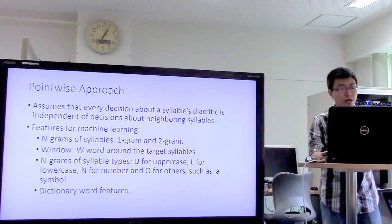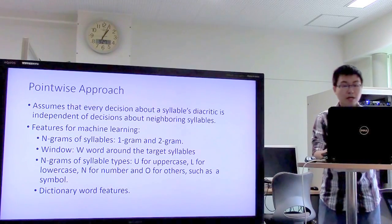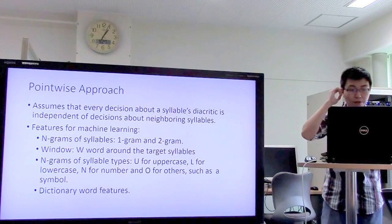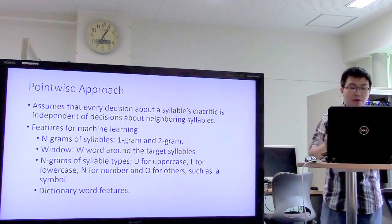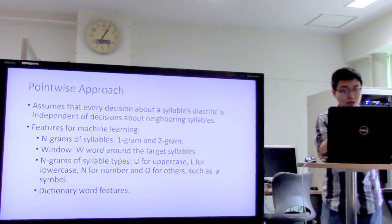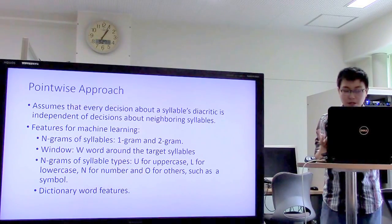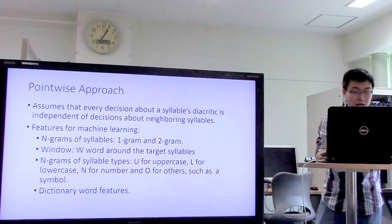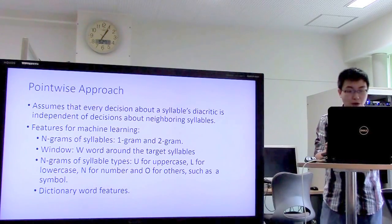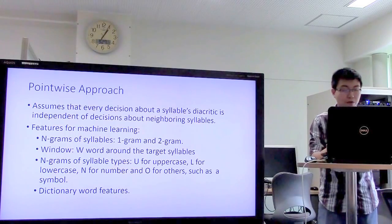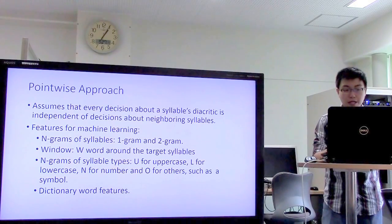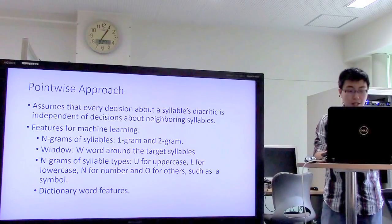A word-wise approach assumes that decisions about a syllable's diacritic are independent of decisions about neighboring syllables, which is suitable for machine learning. The n-gram for syllables uses unigram and bigram within a window around the target syllable. For syllable type, we use: U for uppercase words beginning with uppercase, L for lowercase words, N for number syllables, and O for other symbols. Dictionary word filtering is also applied.